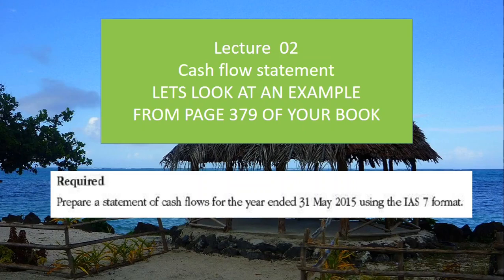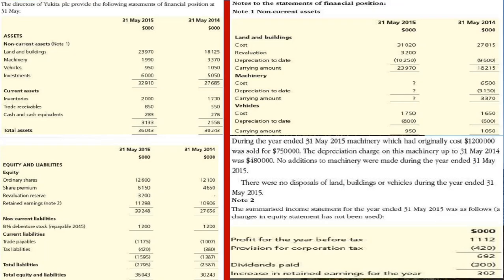This is lecture 2 of the cash flow statement. Today we'll be looking at an example from page 379 of the book. The question asks us to prepare a statement of cash flows for the year ended 31 May 2015 using International Accounting Standard 7 format. The directors of Ukita Private Limited Company provided the following information of financial position as on 31 May.